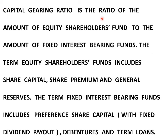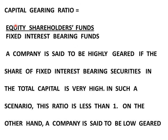Capital Gearing Ratio is the ratio of the amount of equity shareholders fund to the amount of fixed interest bearing funds. The term equity shareholders funds includes share capital, share premium and general reserves. The term fixed interest bearing funds includes preference share capital with fixed dividend payout, debentures and term loans. The formula for calculating capital gearing ratio is equity shareholders funds divided by fixed interest bearing funds.